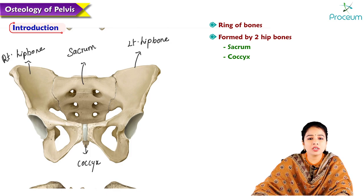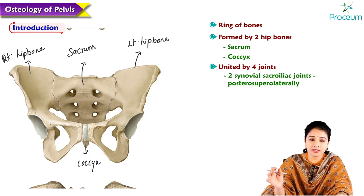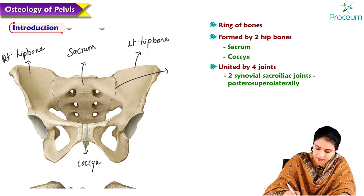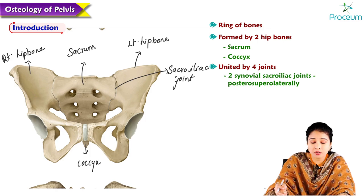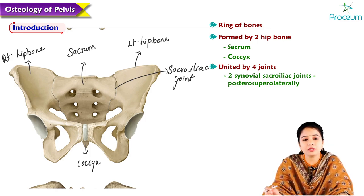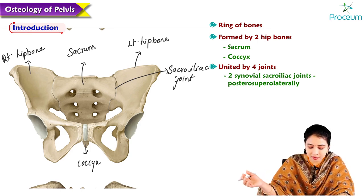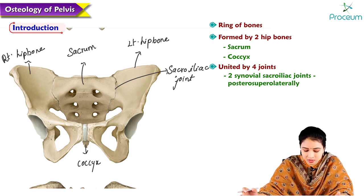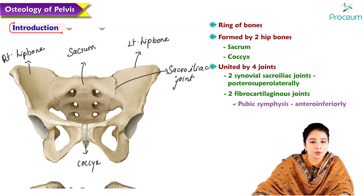These bones are united by four joints. The two synovial sacroiliac joints are present on the posterior superior lateral aspect. The sacroiliac joint is the most stable synovial joint in our body, present on each side of the sacrum where the ala of the sacrum articulates with the ilium. The two fibrocartilaginous joints include the pubic symphysis, present anteriorly and inferiorly.